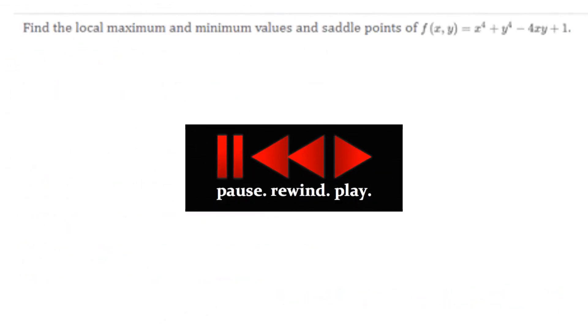So, use that process to find the local maximum, minimum, and saddle points of F of XY equal X to the fourth plus Y to the fourth minus 4XY plus 1. You know what to do. Let's see how you did.